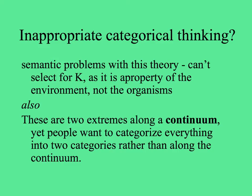This theory has fallen out of fashion in ecology because it can't be explained by natural selection — you can't really select for carrying capacity as it's a property of the environment, not the organisms. Additionally, organisms have been classified as one or the other when really all organisms are arranged along a continuum.